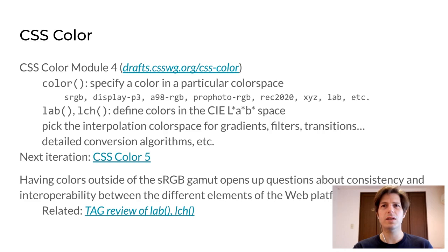The reference specification for this is the CSS color module. Among other things, the CSS spec defines a color function that lets the author explicitly indicate the desired color space of a color. It also defines the LAB and LCH functions to specify colors in the LAB color space, which follows human perception. It also provides detailed control over how interpolation happens, as well as many other features.